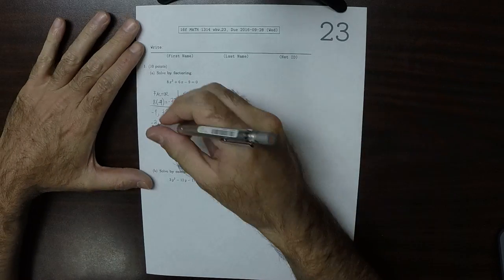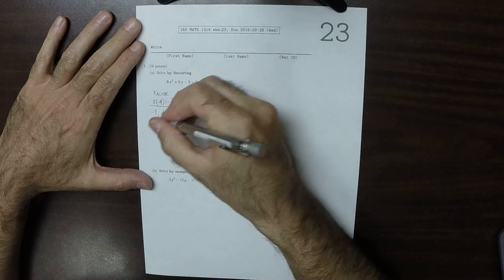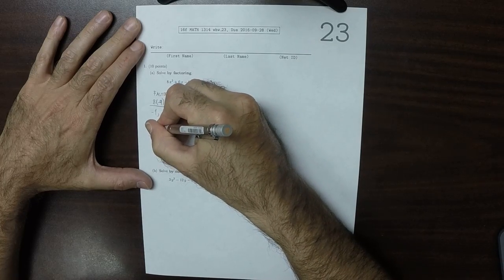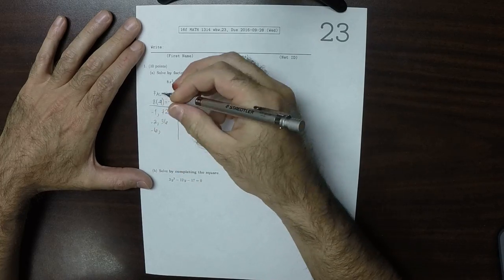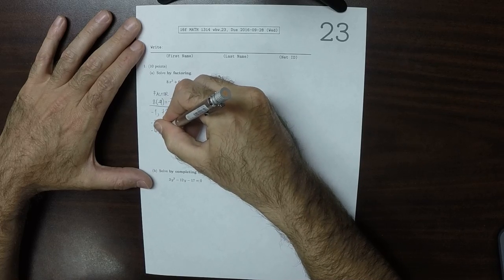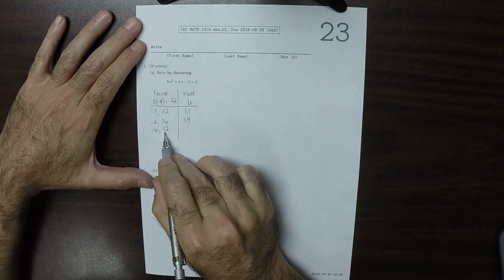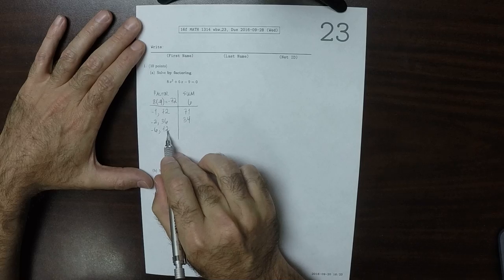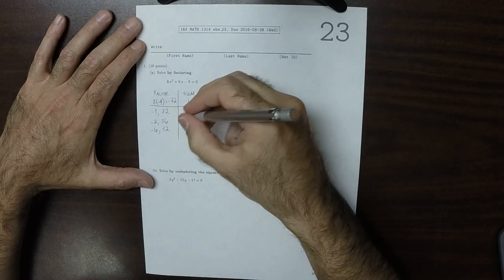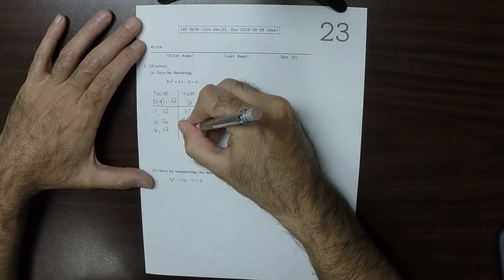Let's try maybe a bigger number. How about negative 6 and 12, because 6 times 10 is 60, and another 6 times 2 is 72. So that would be 6. That's what we were looking for.